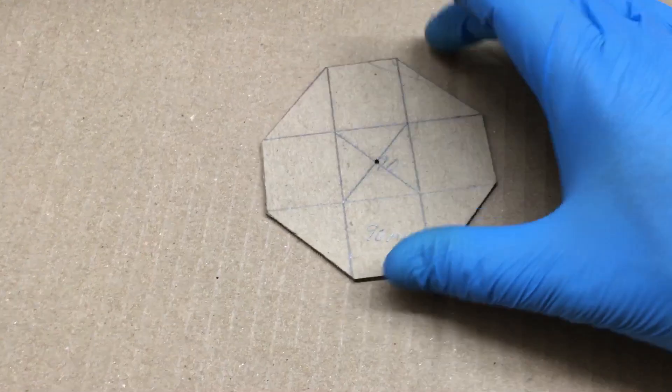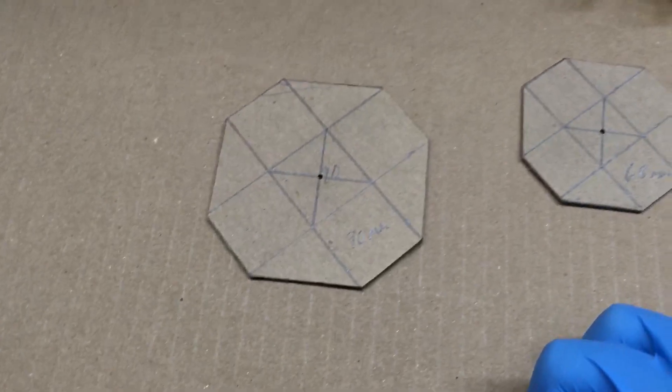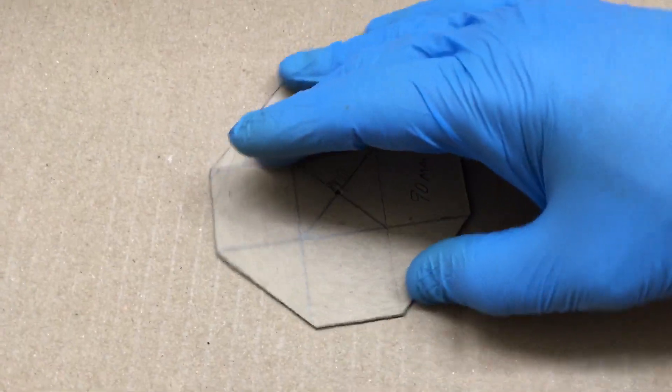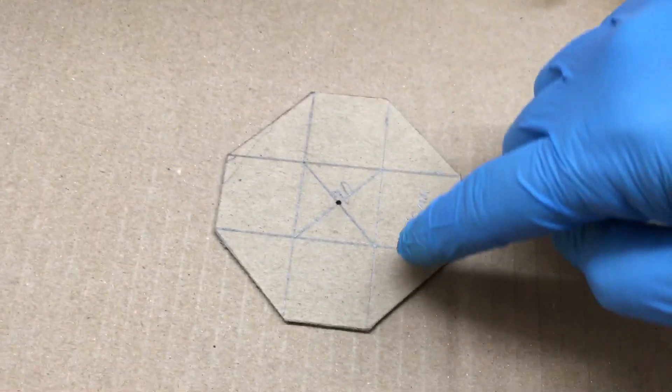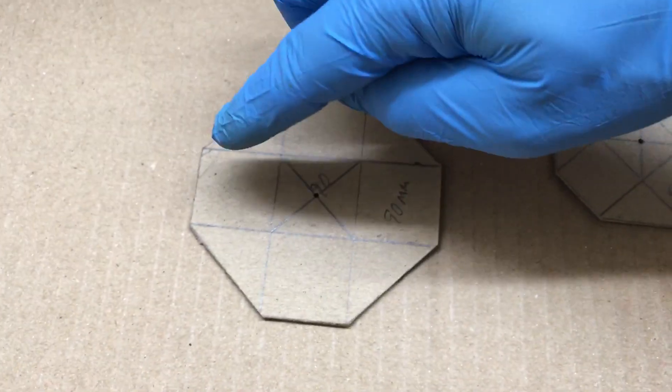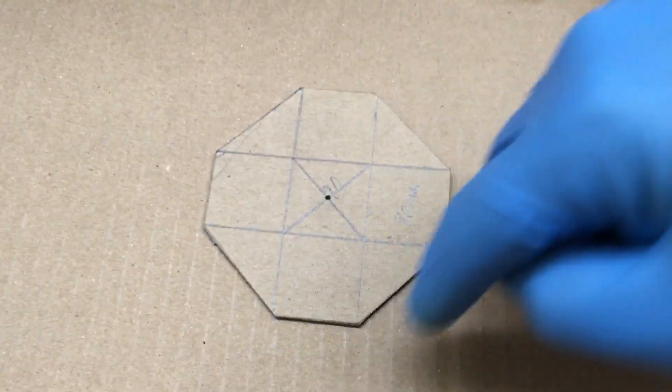Then I cut the square into thirds this way and this way. As you can see, if you hold it this way you get, understandably, cut it into thirds. Then I scored a line from here, here, here, and here and cut those pieces off.